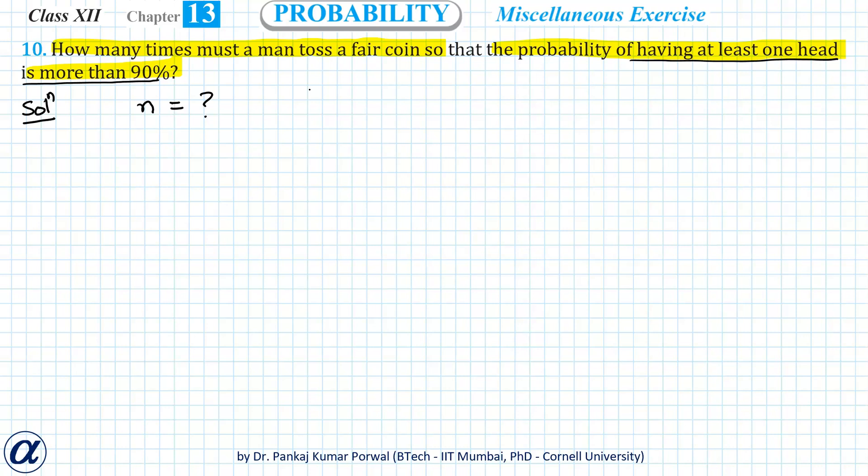Each trial has two possible outcomes: one is head and another is tail. Because the coin is fair, P(H) = 1/2 = P(T).